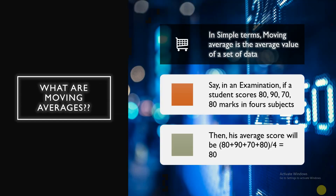In simple terms, an average is the average value of a set of data. For example, say you have 4 subjects in your examination and you score 80, 90, 70, and 80 marks. To find the average, you add up all 4 marks and divide by the total number of subjects — giving you an average of 80.